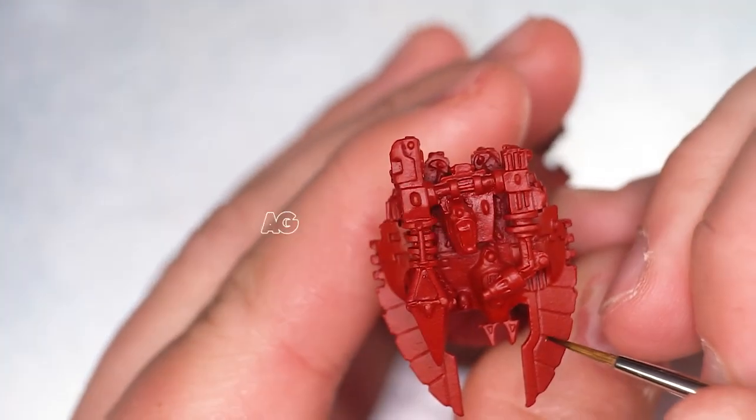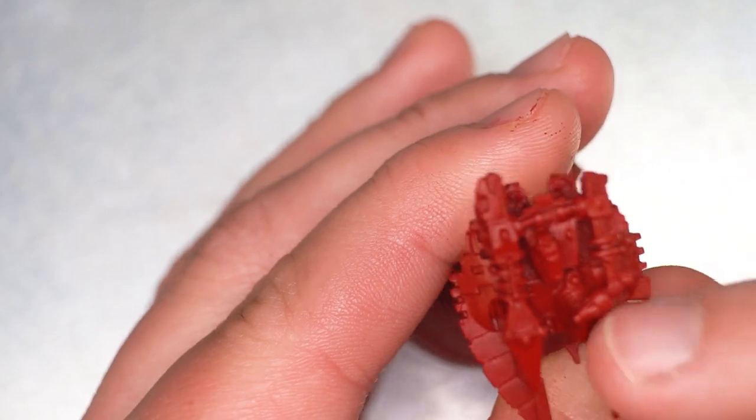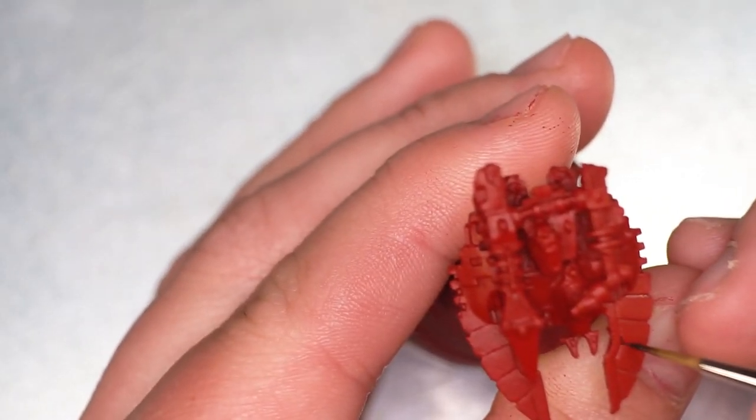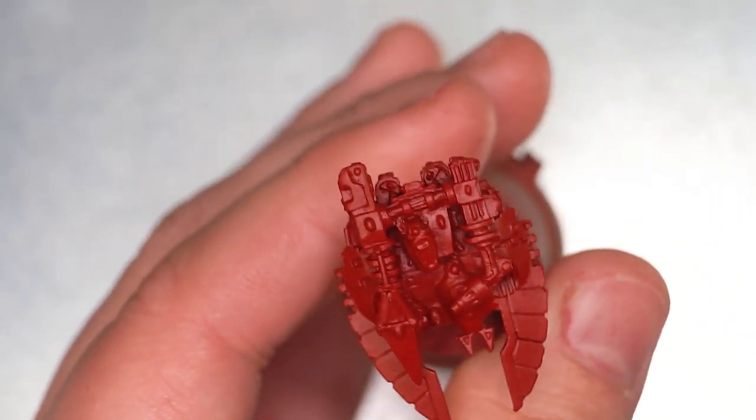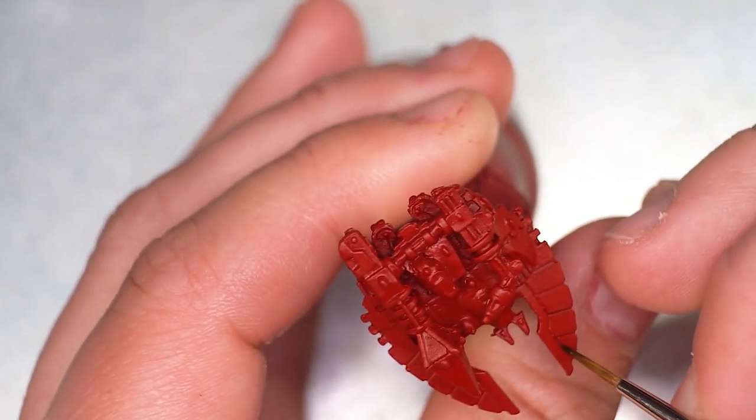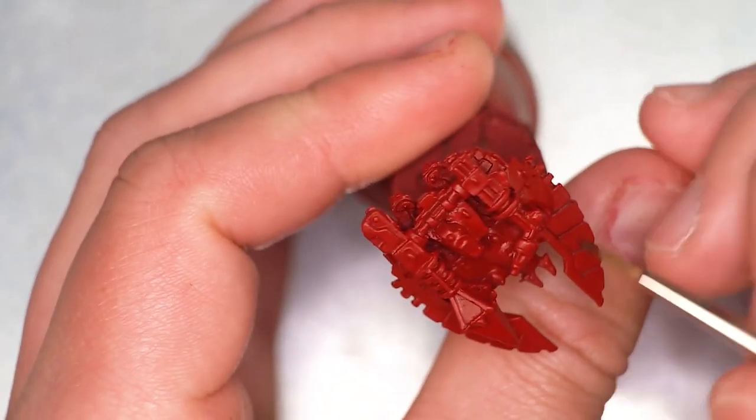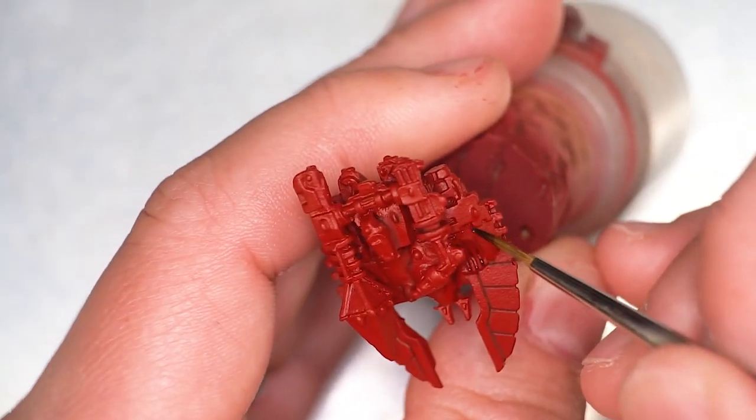Now we're going to be moving on to the shading of the model and we're going to be using Agrax Earthshade to do a majority of the shading work. We're going to be pulling the Agrax Earthshade into the usual places, the nooks and crevices such as the panel lines and what have you, but also we're going to be pulling the Agrax Earthshade into some of the deep contoured areas to emphasize the depth of the model.